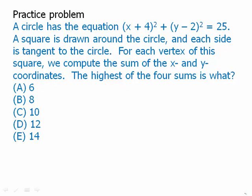Here's another question — a bit of an odd one. Pause the video and then we'll talk about this. It gives us the equation of a circle. A square is drawn around the circle and each side is tangent to the circle. For each vertex of the square, we compute the sum of the x and y coordinates. The highest of the four sums is what?